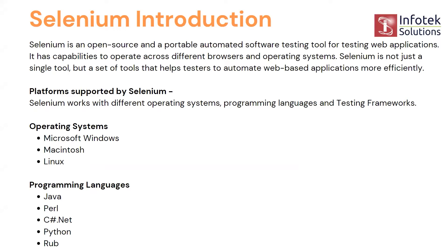Selenium tests web applications, meaning websites. It has capabilities to operate across different browsers and operating systems. Selenium is not just a single tool but a set of tools that help testers automate web-based applications more efficiently. It supports multiple browsers and is used to test web applications in terms of automation. The operating systems it supports include Microsoft Windows, Macintosh, and Linux — basically all major operating systems are supported in Selenium.